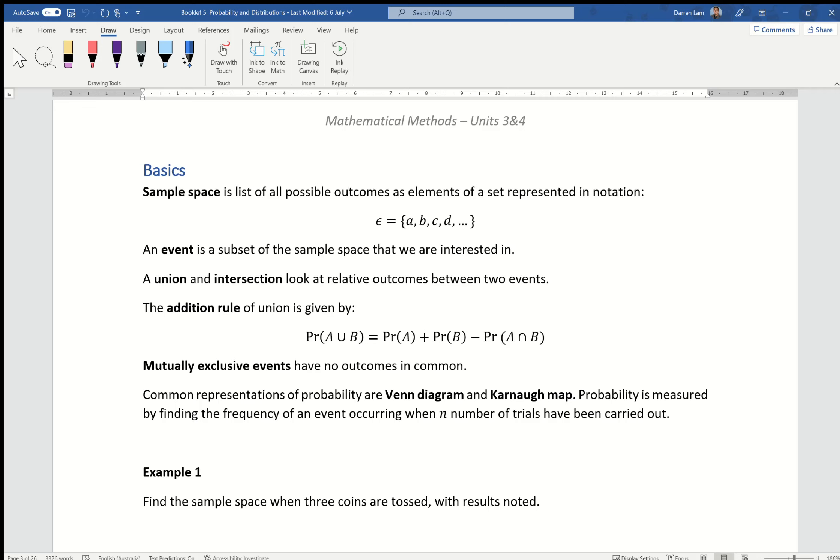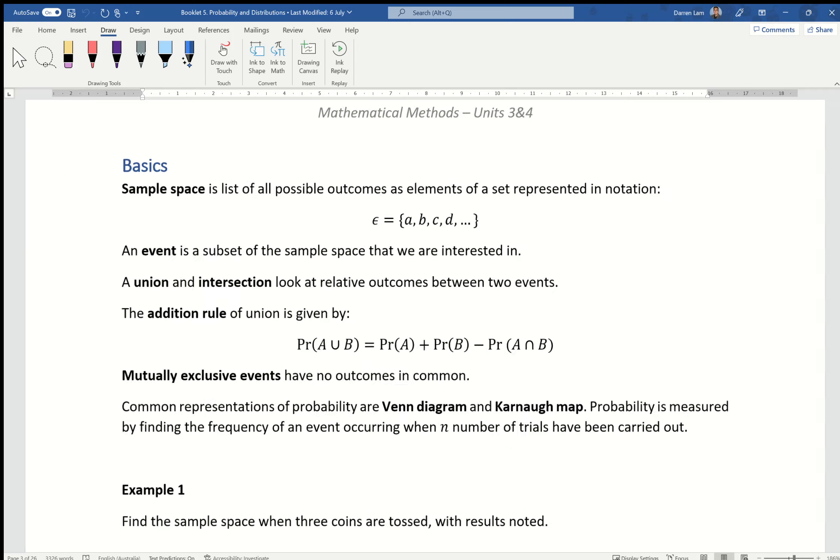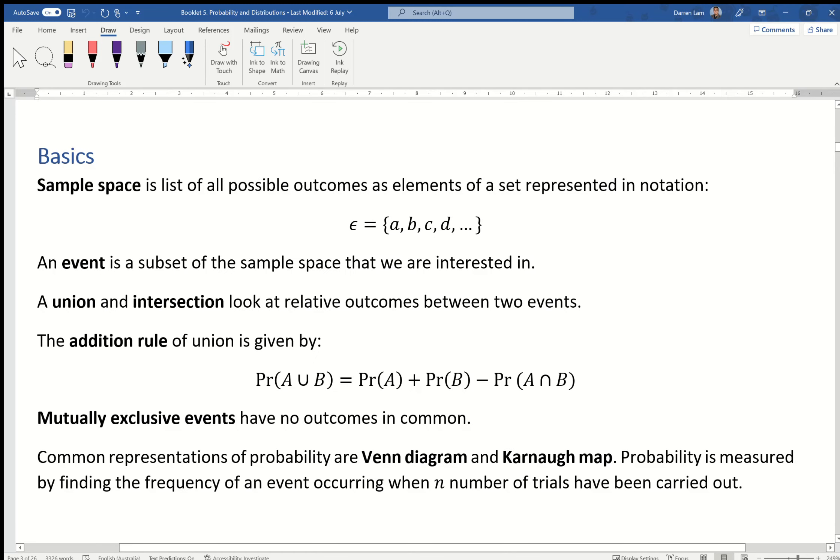In Exercise 13A, we're looking at the basics of probability, specifically sample spaces and probabilities. There's a couple of terminologies that we should make sure we know. Sample space, exactly as the name implies and you guys have already seen this before, is the list of all possible outcomes as elements of a set represented in specific notation. The specific notation I'm talking about is using epsilon.